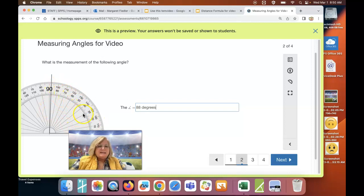Any angle measure that is less than 90 degrees, from zero to 90 degrees, is called an acute angle, A-C-U-T-E.